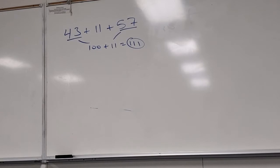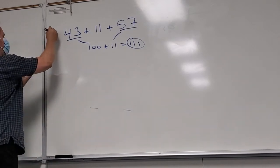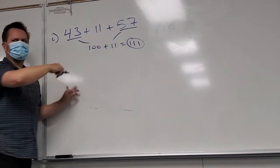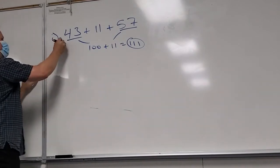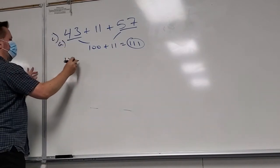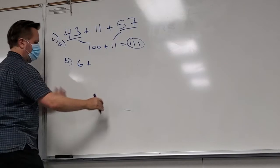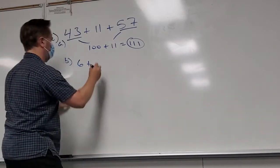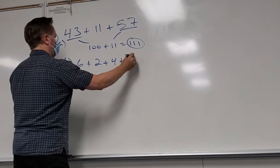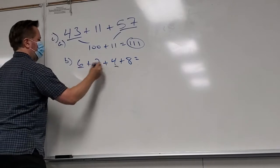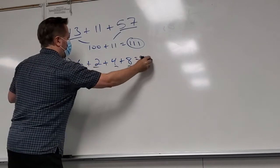One example: six plus two plus four plus eight. Six and four make ten, two and eight make ten — that's twenty. We're trying to find numbers that are complementary, that together make a nice whole number.